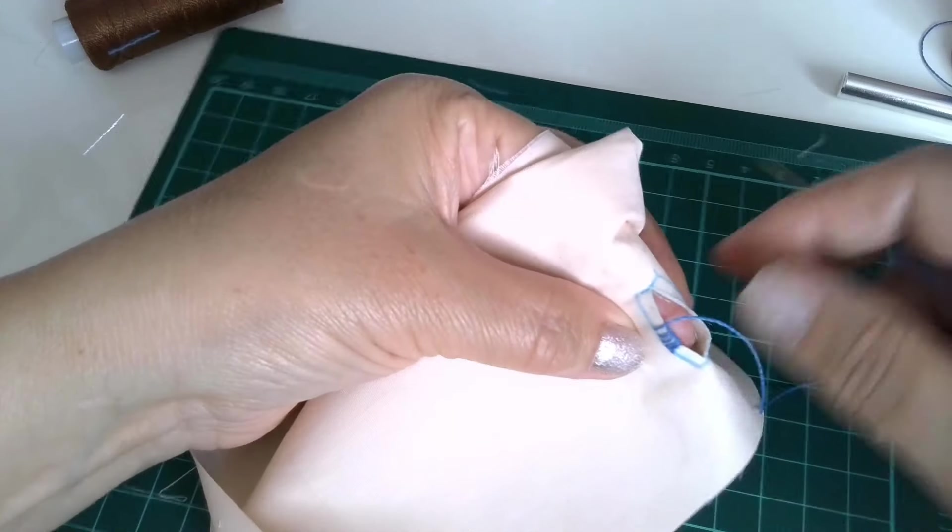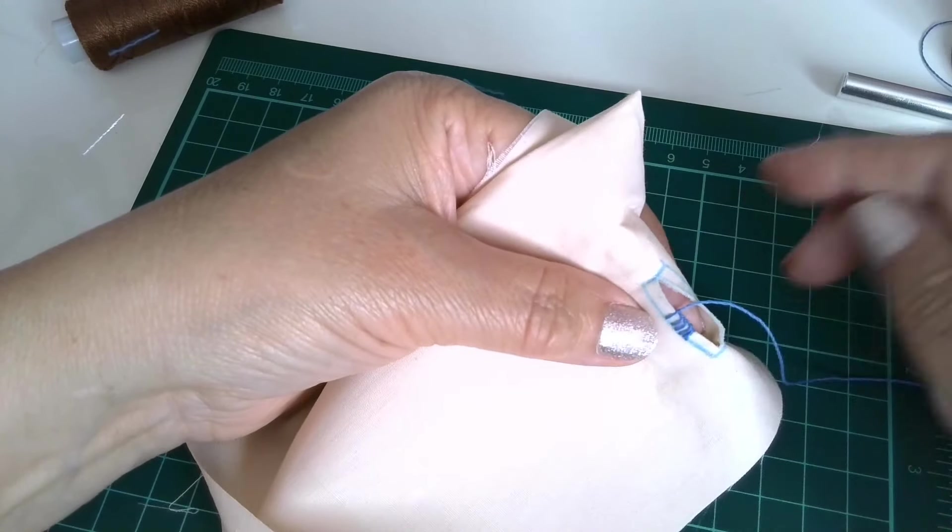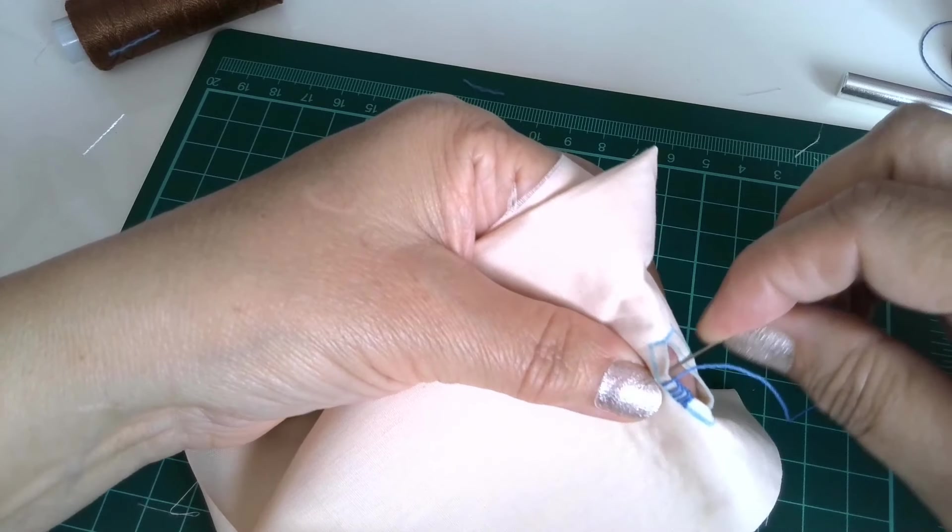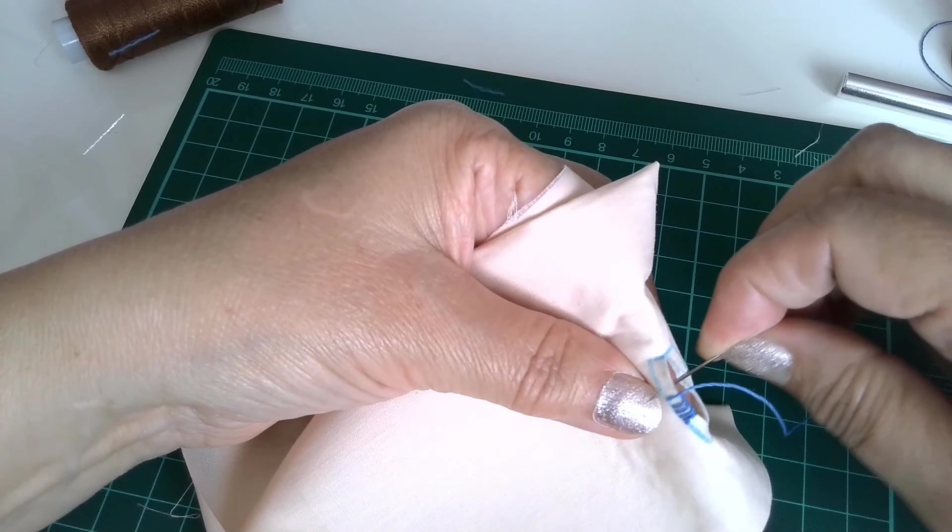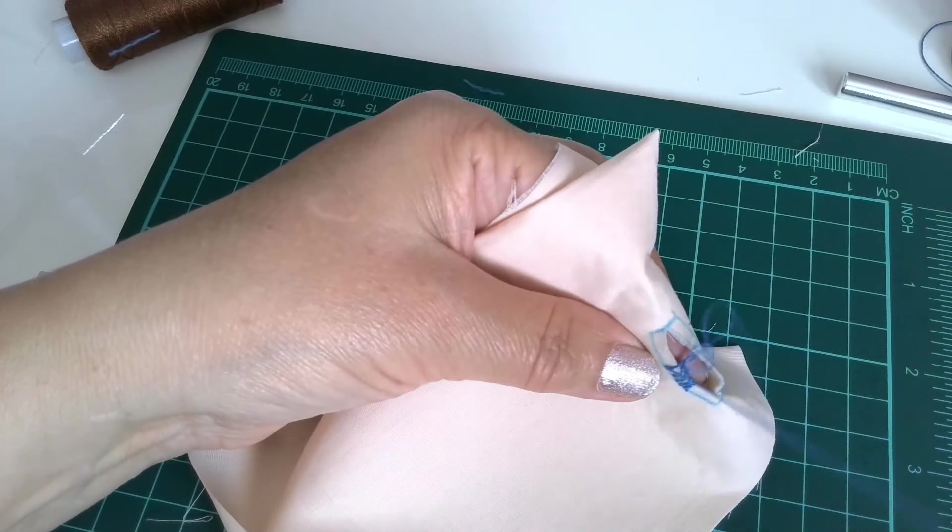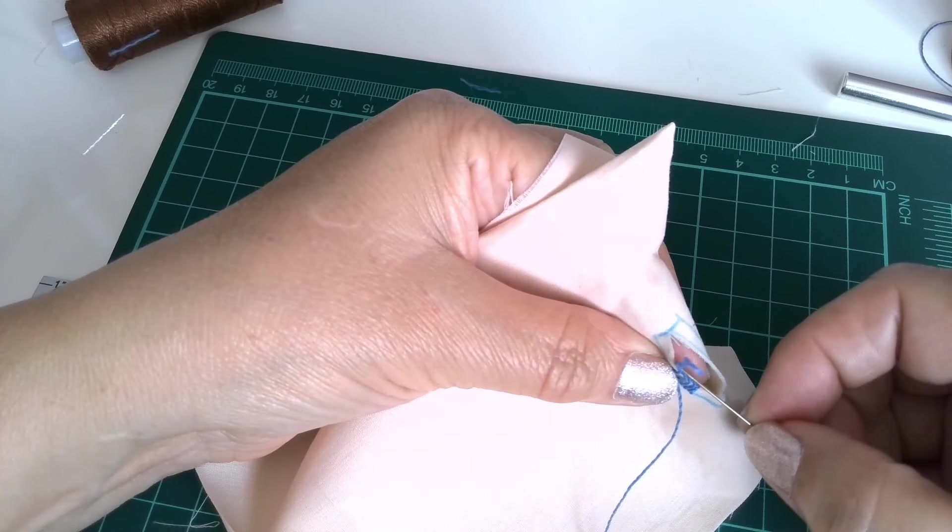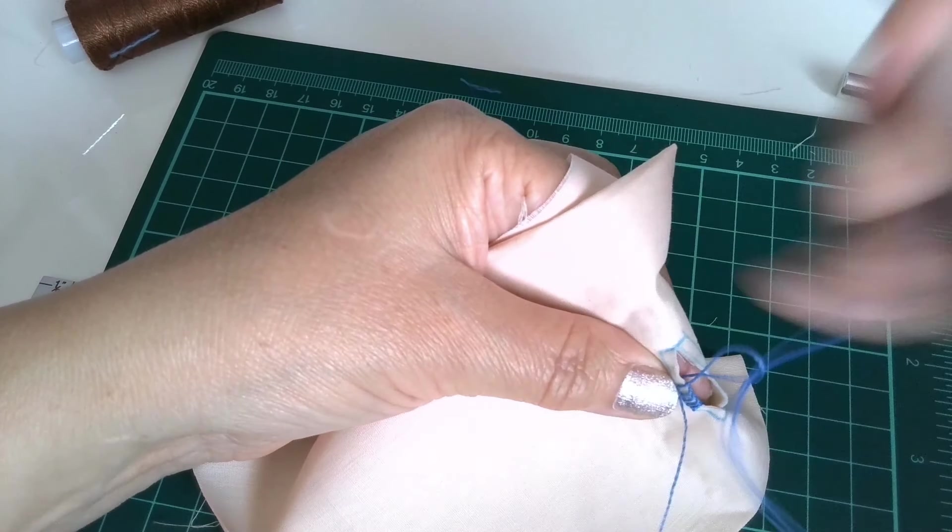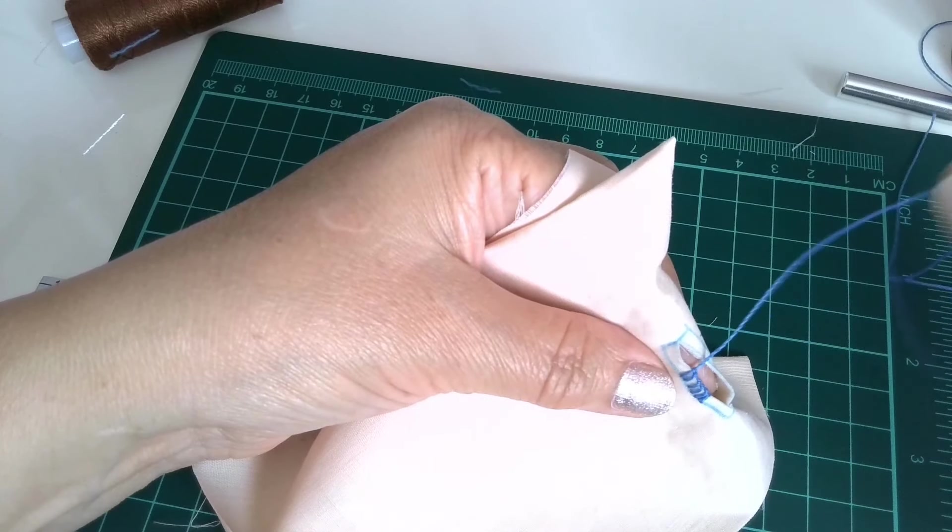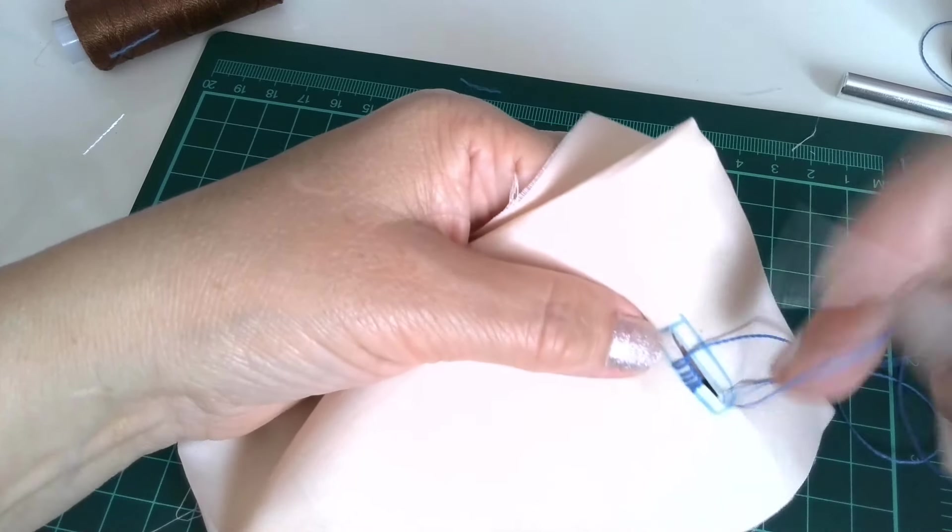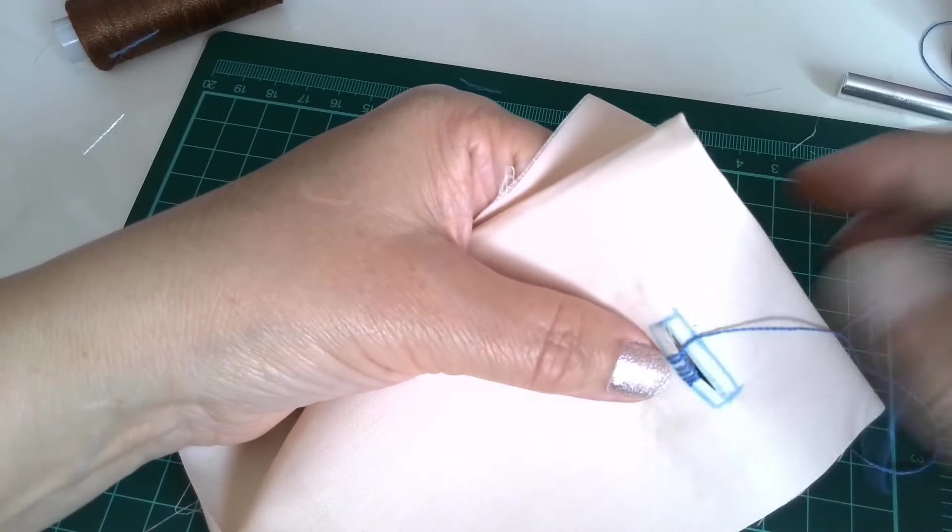This stitch is called buttonhole stitch. It's about the same as blanket stitch, but you have to insert the needle in the loop from down, not from up. So you will make the knot at the edge of the buttonhole.